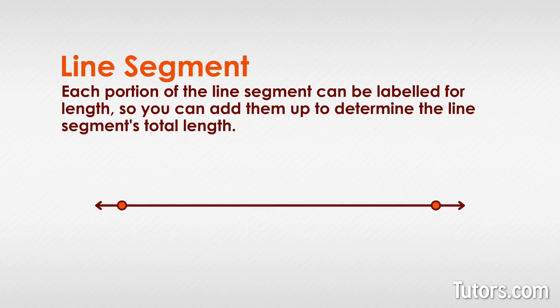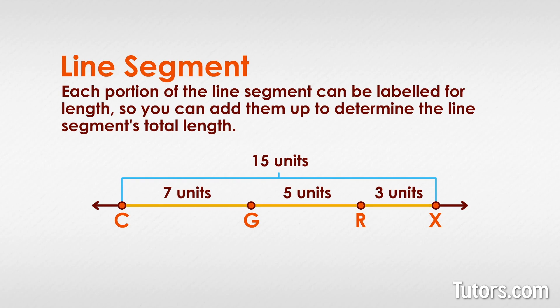Here we have line segment CX, but we have added two points along the way: point G and point R. To determine the total length, you add each segment of the line segment: seven units for segment CG plus five units for segment GR plus three units for segment RX. This gives you a total of 15 units. This is the total length of line segment CX.